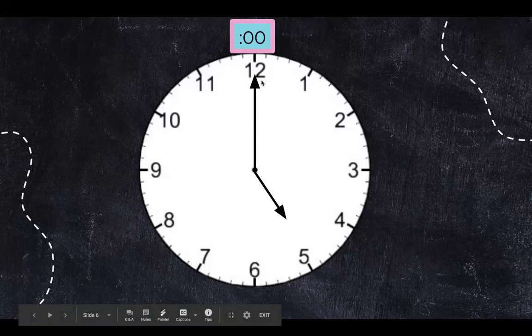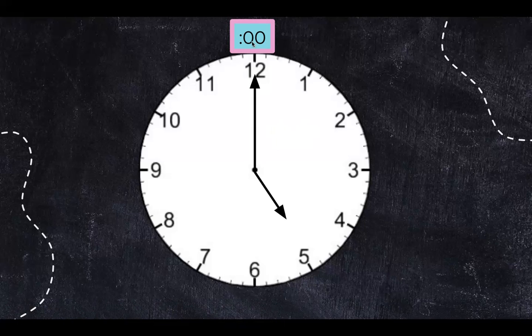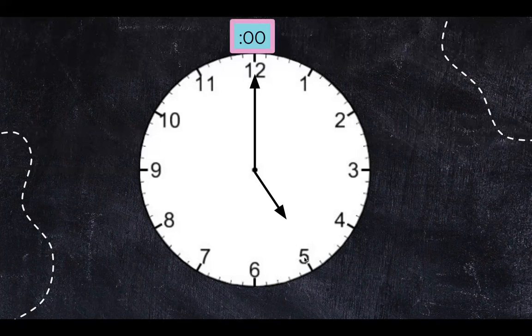When the minute hand is pointed to the 12 we know that the minutes are zero. So this clock right now is showing me five o'clock because the hour hands pointed at the five and the minute hands pointed at the o'clock.